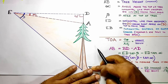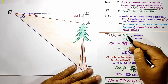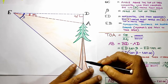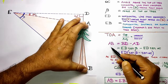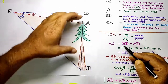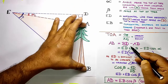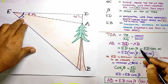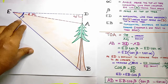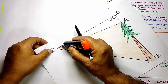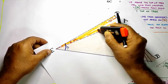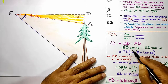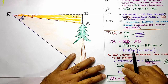We use tangent (TOA): opposite over adjacent, where opposite is unknown and adjacent is known. We want AB, so AB = DB minus AD. For DB we use ED·tan(beta), and from that we subtract ED·tan(alpha). So AB = ED·tan(beta) − ED·tan(alpha), which simplifies to AB = ED(tan beta − tan alpha).